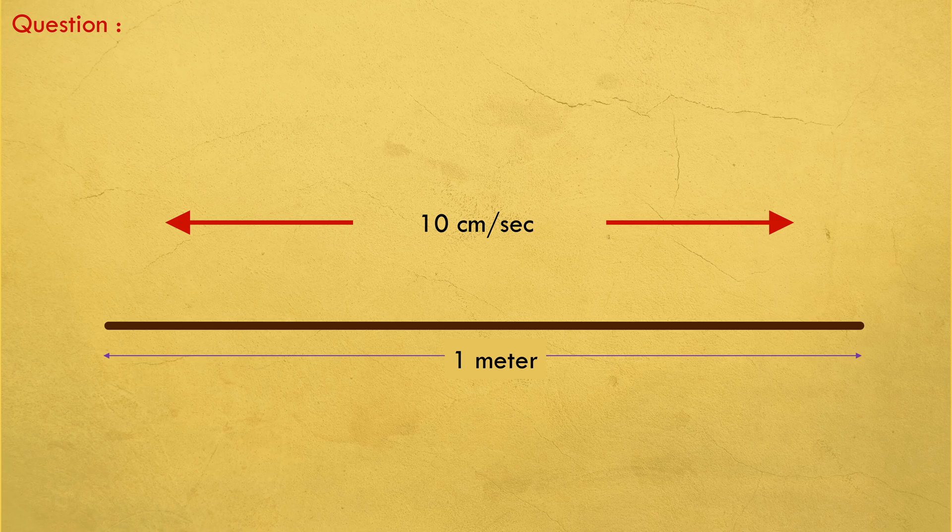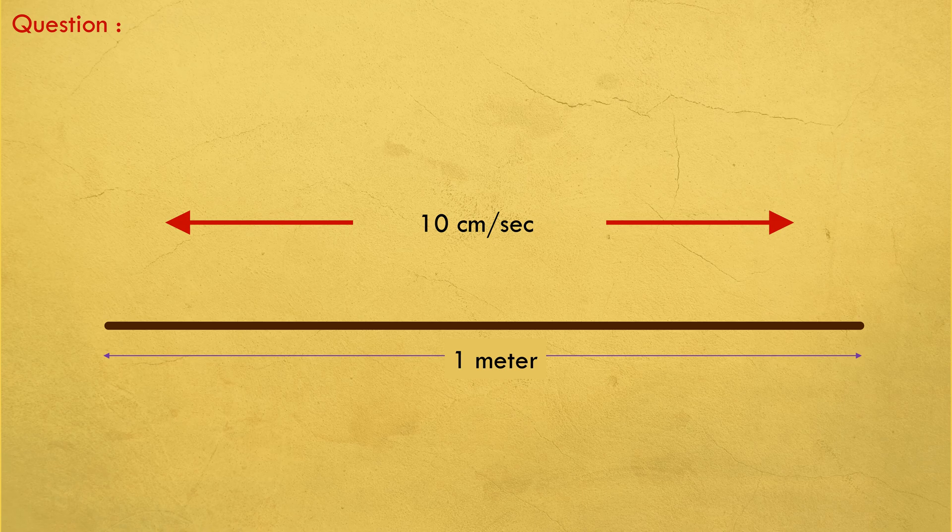If two ants collide with each other, they immediately change direction and if they reach the end, they fall down, like shown.